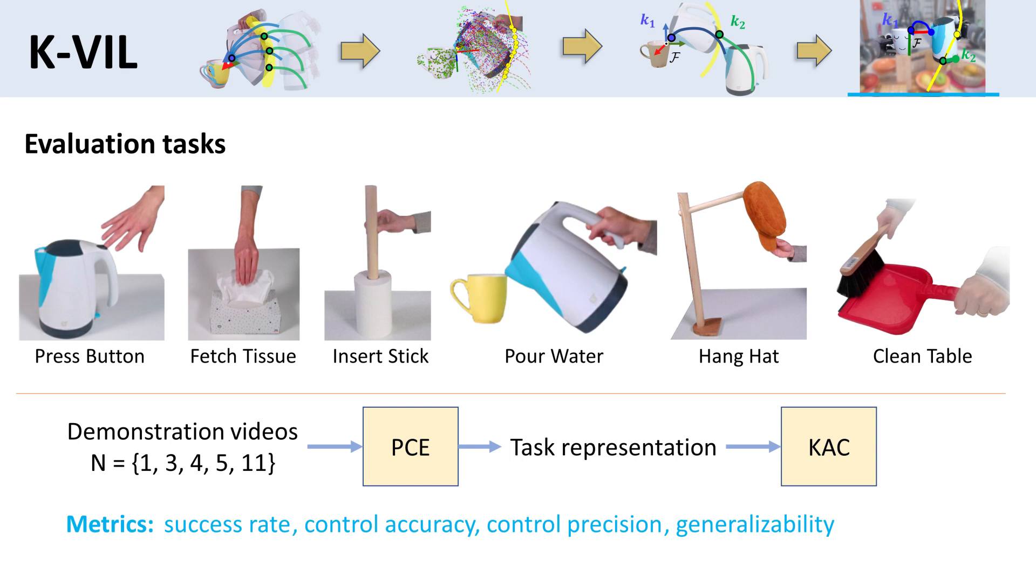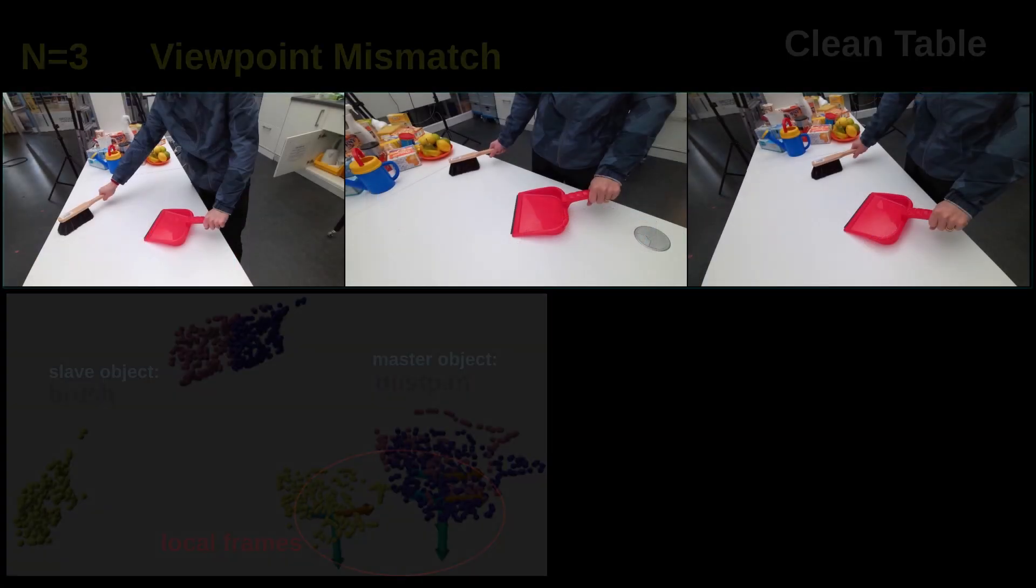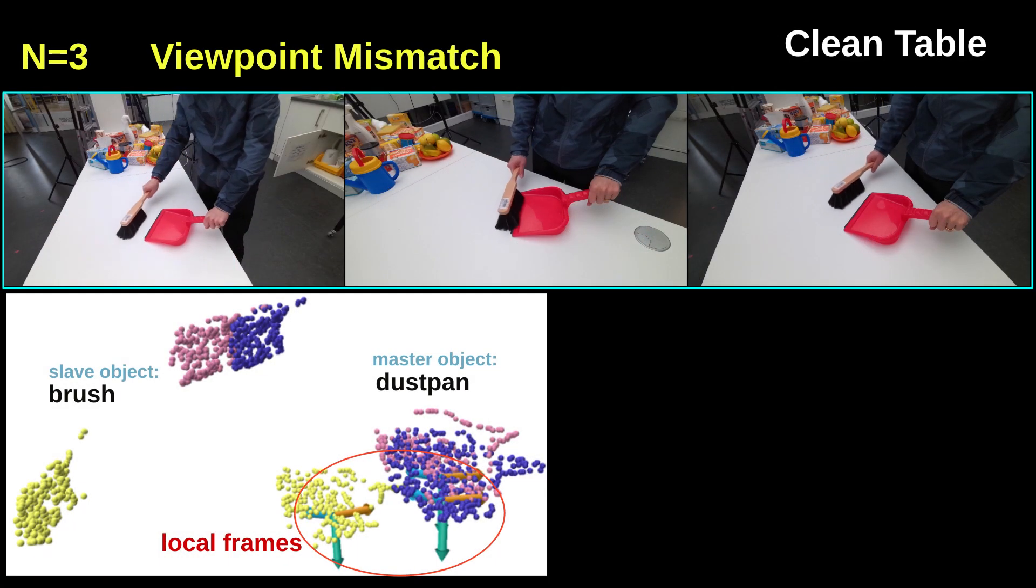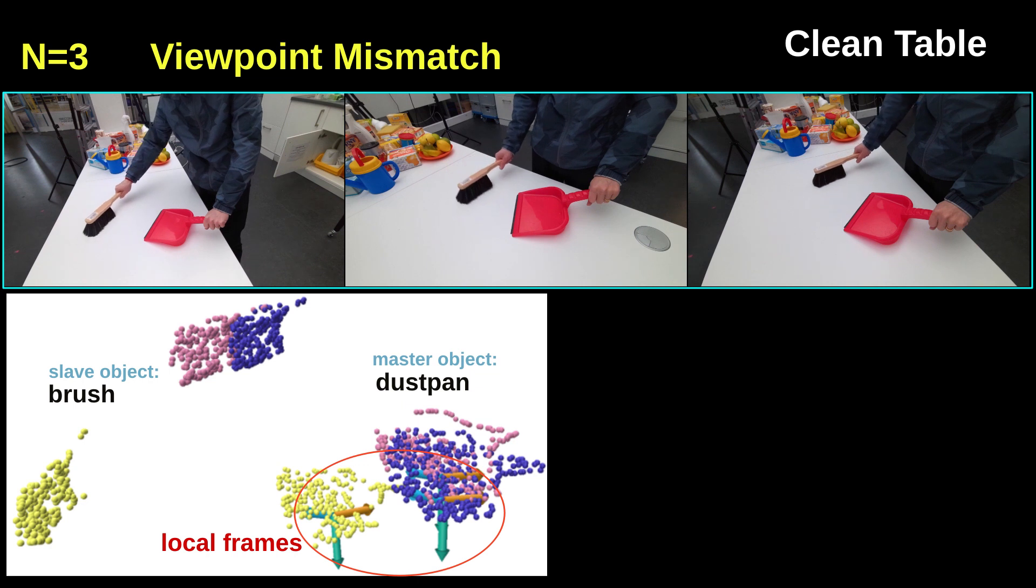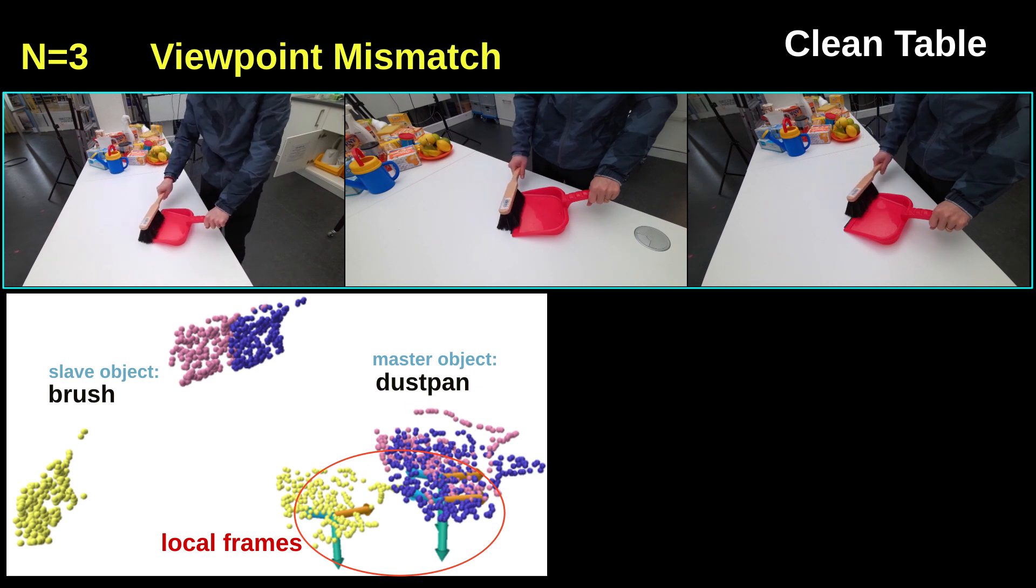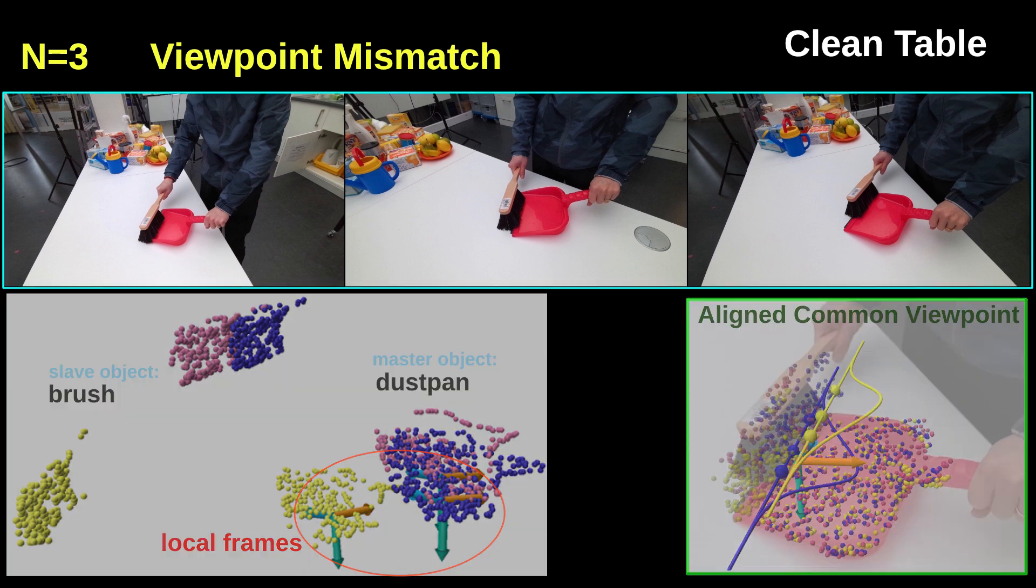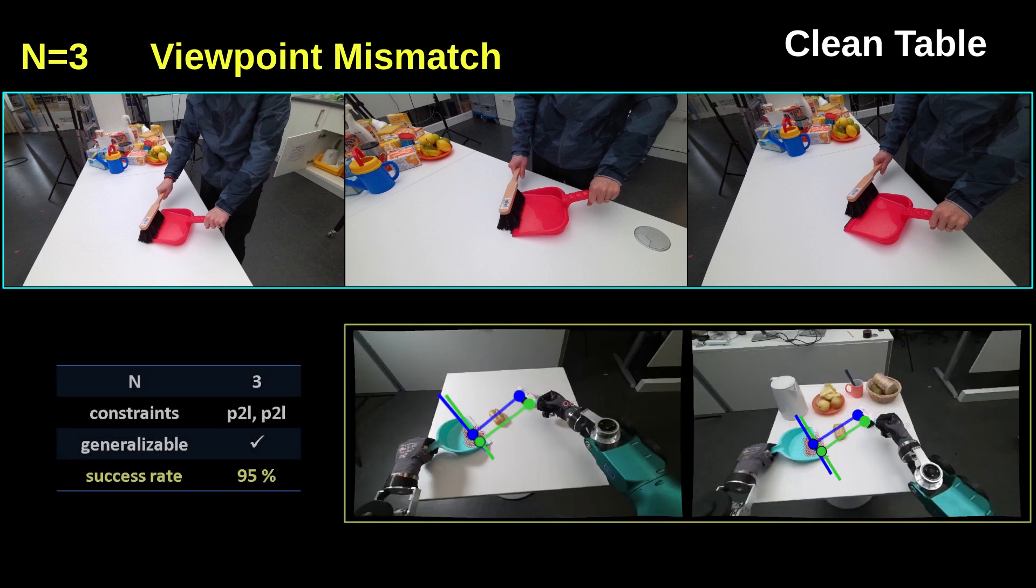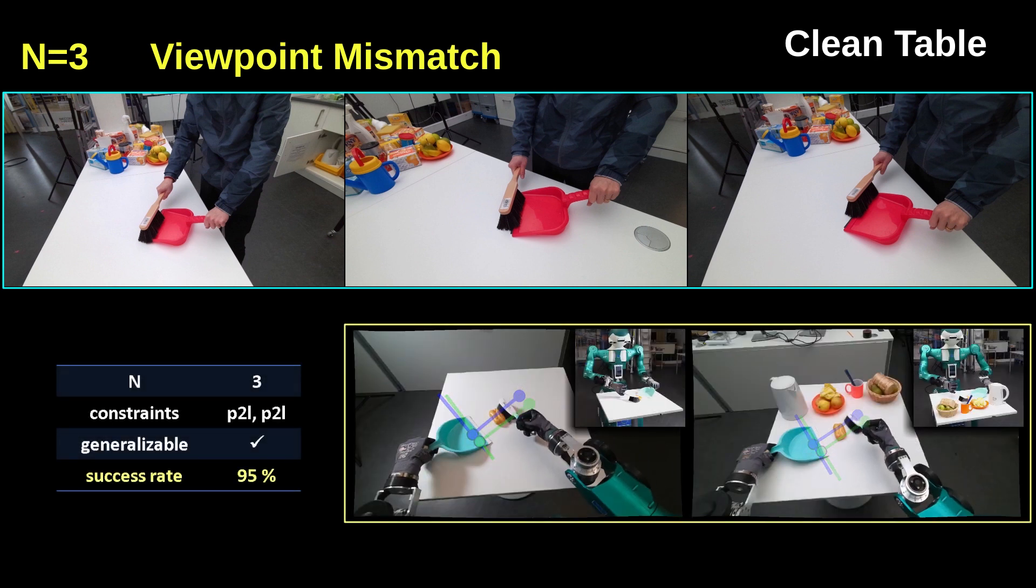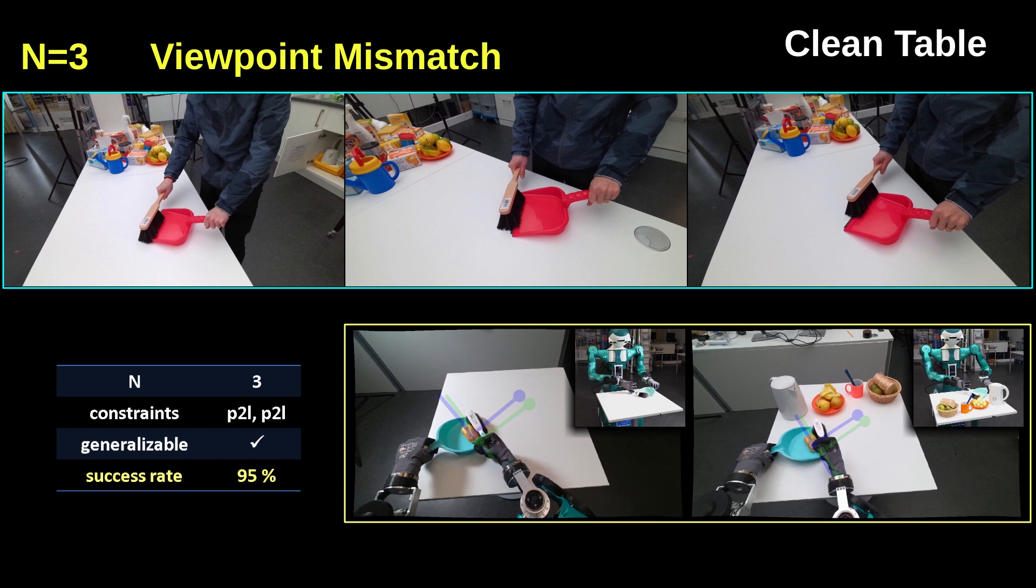Given three demonstrations of the clean table task with viewpoint mismatch, KIVOS first aligns the candidate local frames to create an aligned common viewpoint. In the common viewpoint, the geometric constraints become clear. The reproduction by the robot can be conducted from a new viewpoint. Therefore, KIVOS handles viewpoint mismatch in both demonstrations and reproductions. In the next, for clarity, we only present the results of other tasks in the aligned common viewpoints.